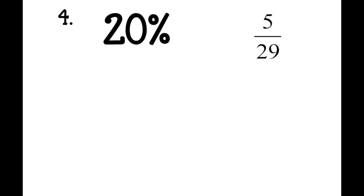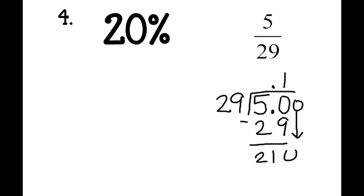So to do that, we need to do division. So we take 5 divided by 29, and 29 goes into 50 one time. And then we subtract, and we're left with 21, bring down a 0. 29 goes into 210 seven times. And we subtract, and we're left with a 7, bring down a 0.